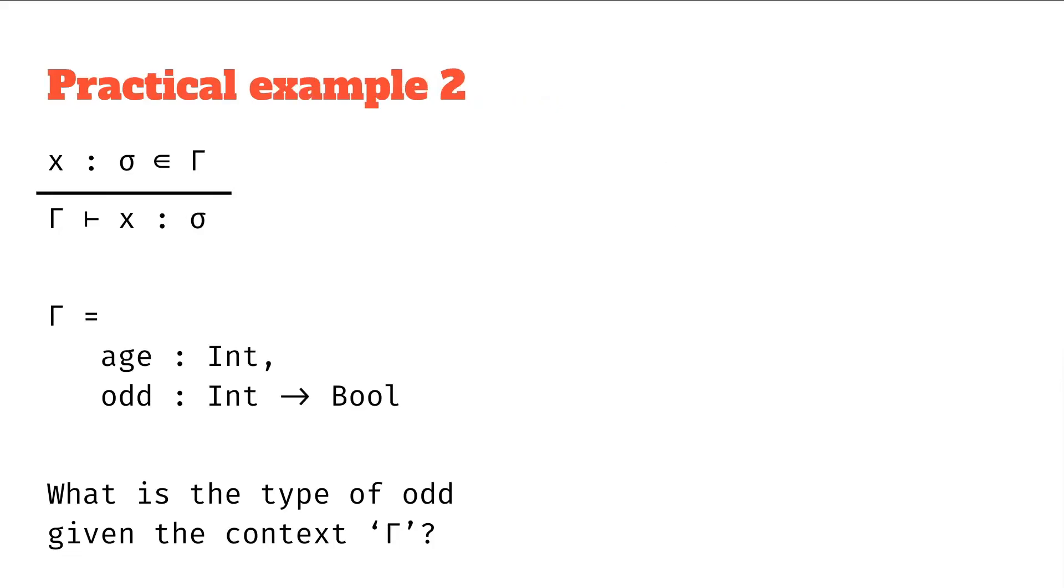And just to cement that learning in, let's do another example, this time back with typing rules. So here we have the variable rule again. We've got our same context where we have our context with age as type int and odd as type int to bool.